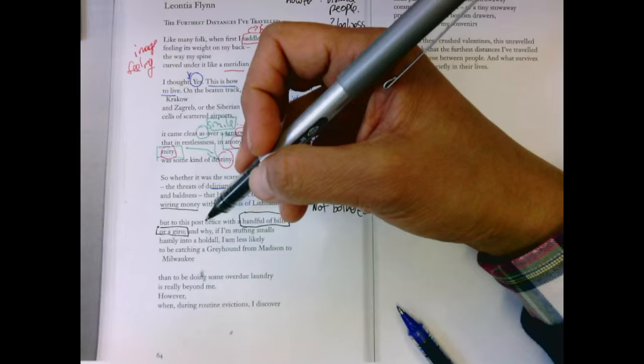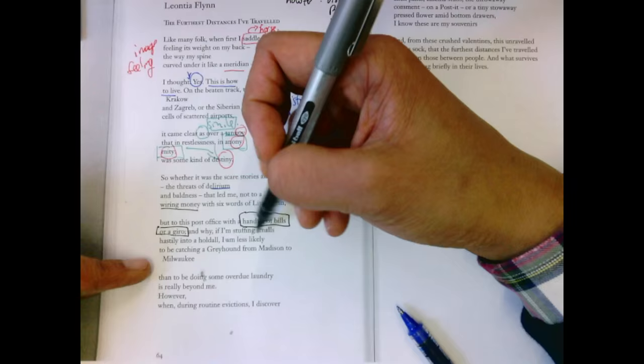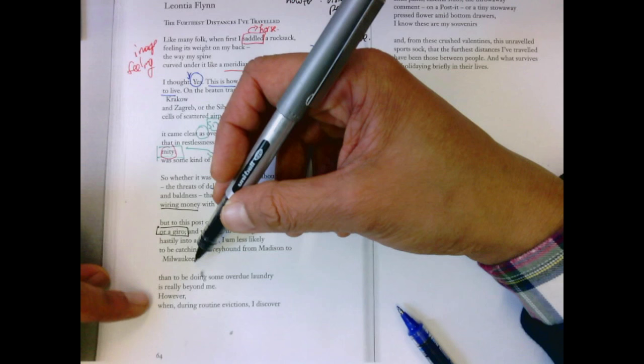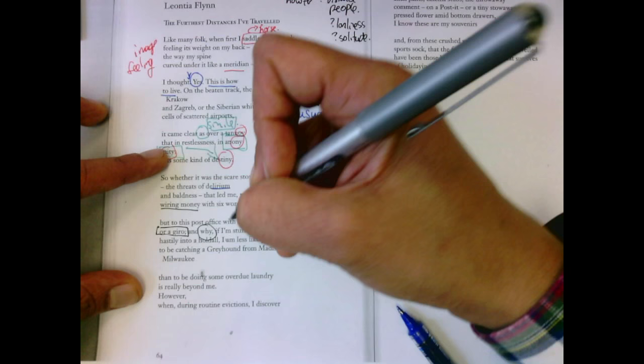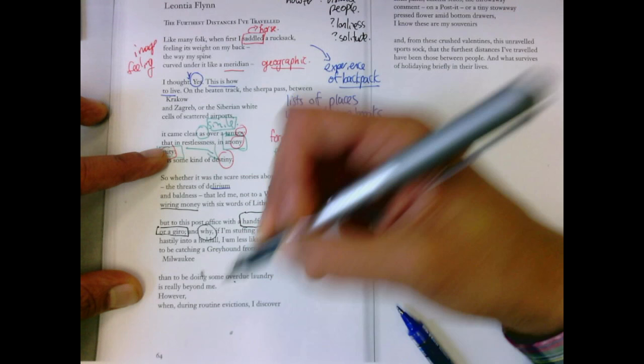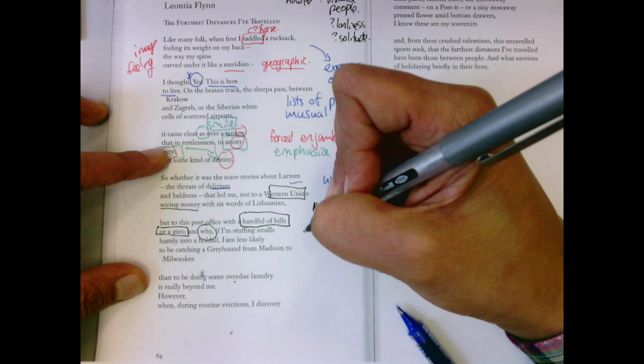And why? If I'm stuffing smalls hastily into a hold all, I am less likely to be catching a Greyhound from Madison to Milwaukee than to be doing some overdue laundry is really beyond me. So why I'm less likely to be on a bus than be doing laundry. Now she's, if she's, if she has this cash and she's stuffing it into her place where she hides her money,